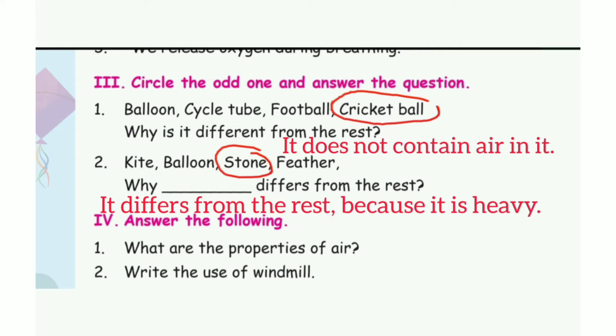Circle the odd one and answer the question. First one: balloon, cycle tube, football, cricket ball. The answer is cricket ball. Why is it different from the rest? The answer is it does not contain air in it.